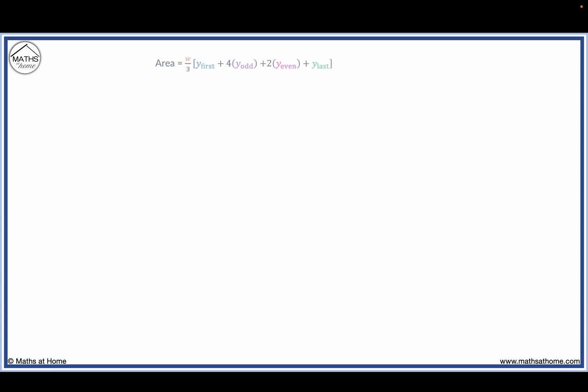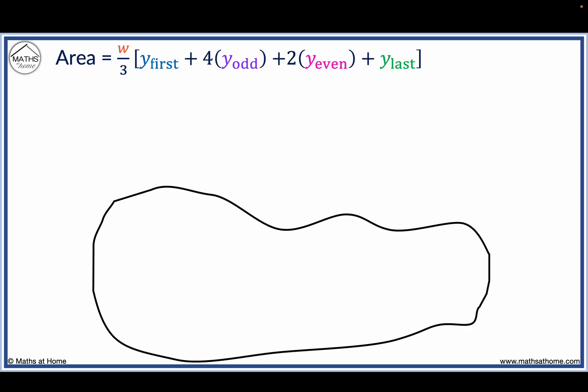For example, we will use this formula to approximate the area of this irregular shape, with the following measurements all measured by a width of 6 metres apart.